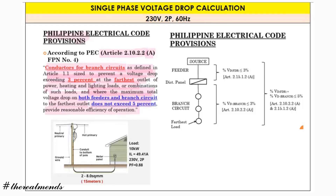To interpret that code: from the source to the distribution panel is the feeder, and the voltage drop should be at or below 3%. From the distribution panel to the load is the branch circuit, also at or equal to 3%. The overall total should not exceed 5%. If you add both maximums, that is three plus three equals six percent, but the code caps it at five.